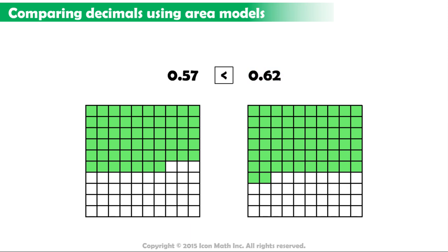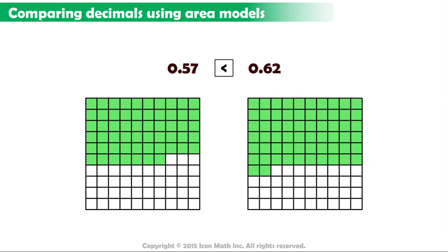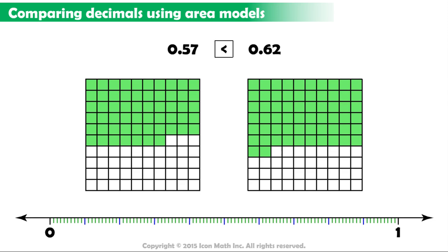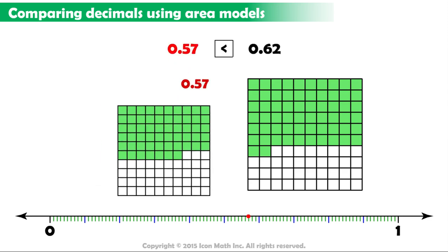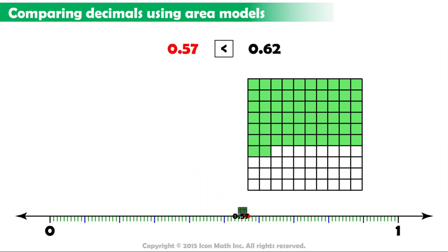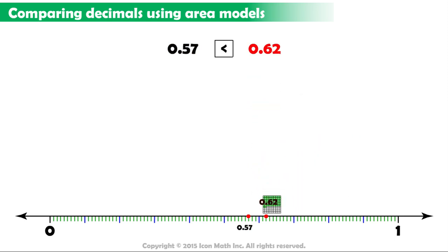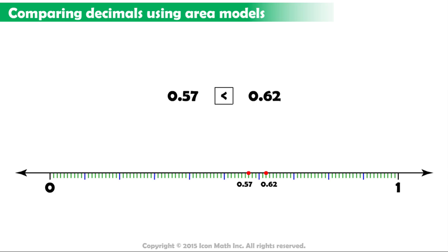Again, we can represent these two decimal fractions on the number line. Here is fifty-seven hundredths, and here is sixty-two hundredths. So, the number fifty-seven hundredths is less than the number sixty-two hundredths.